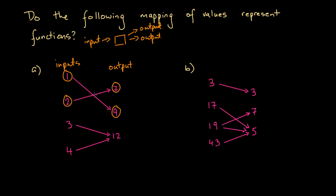This is looking good so far. We need to check every input to determine whether there's a function. Our third input is 3 — following the arrow we find the output is 12. So again we've got one input and one output. Finally let's look at input 4.